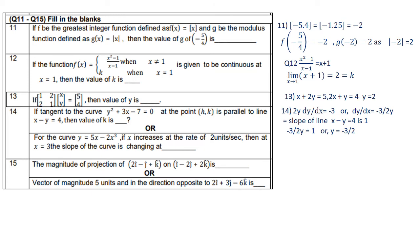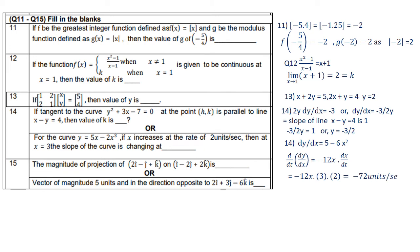Question 15: for the curve y = 5x − 2x³, if x increases at the rate of 2 units per second, find the rate at which the slope is changing at x = 3. dy/dx = 5 − 6x². The rate of change of slope is d/dt(dy/dx) = −12x · (dx/dt) = −12 × 3 × 2 = −72 units per second.